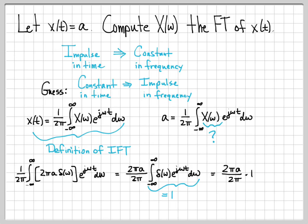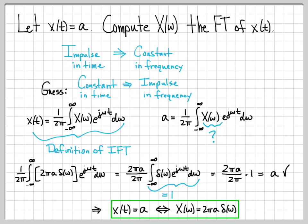So by working through this integral, we've shown that when x of omega equals 2 pi a delta of omega, the inverse Fourier transform gives us a — exactly the time domain function we wanted. That checks out, and we now have another Fourier transform pair: x of t equals the constant a has a Fourier transform, or frequency domain representation, of x of omega equals 2 pi a delta of omega.